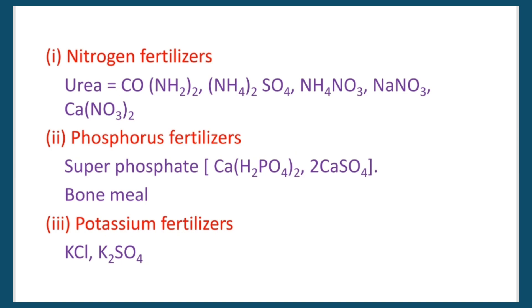Phosphorus fertilizers include superphosphate and calcium dihydrogen phosphate. Calcium sulfate is also associated with superphosphate production.